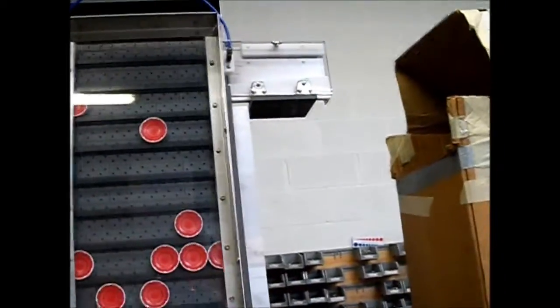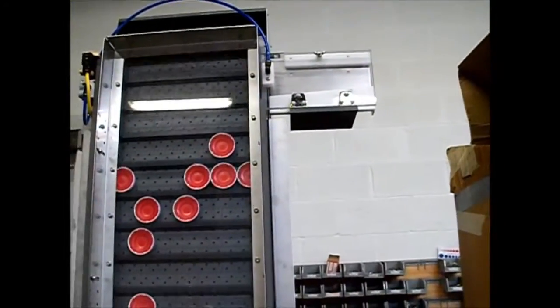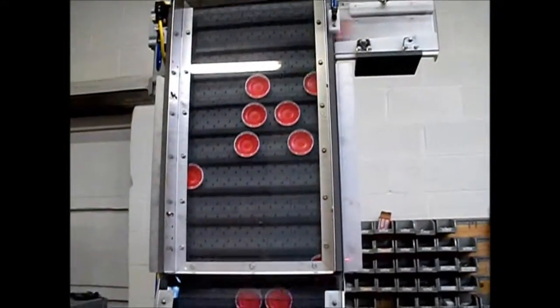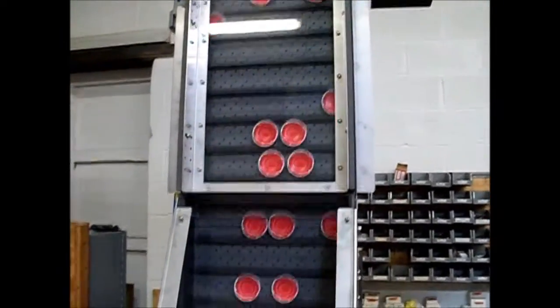You are currently viewing the Econo series sorter, CSC's entry-level sorter, with a 14 inch wide belt and a 6 cubic foot hopper, and compressed air to eject the parts.